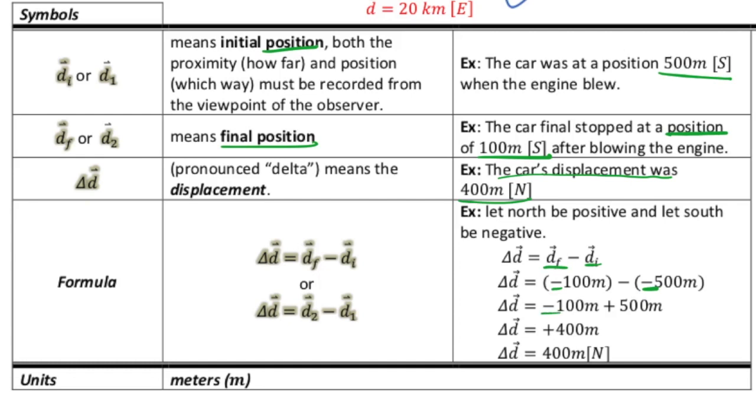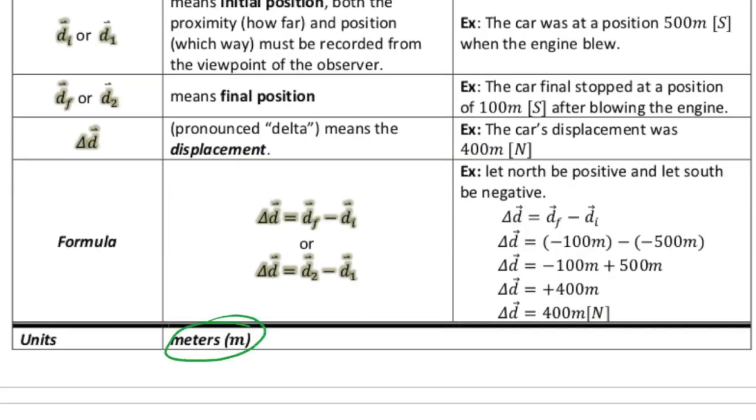And negative 500 minus negative is a plus. And then we have positive 400 meters or 400 meters north. So as you can see, the stuff we needed for vectors is relevant now. And of course, the standard unit is still meters.